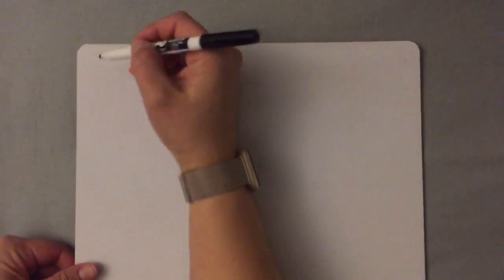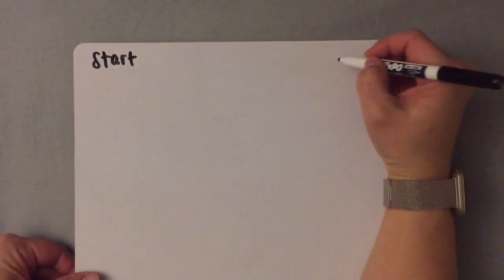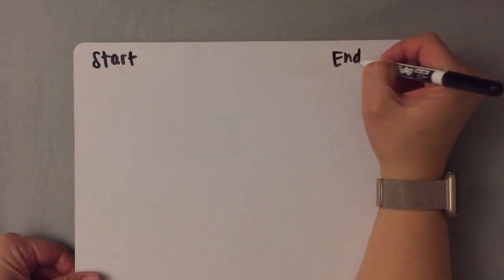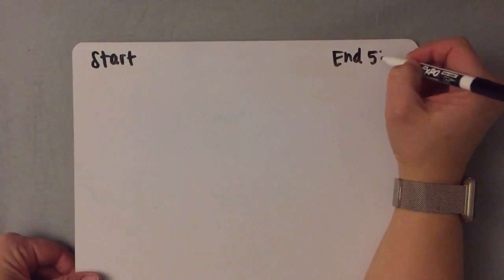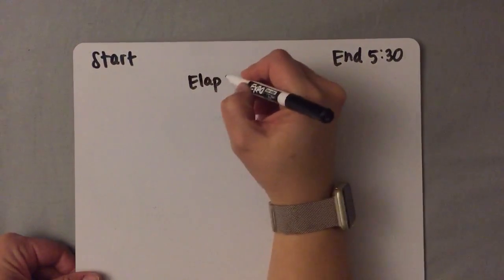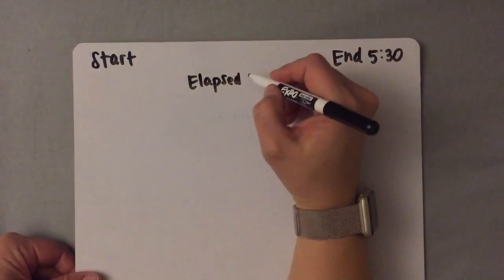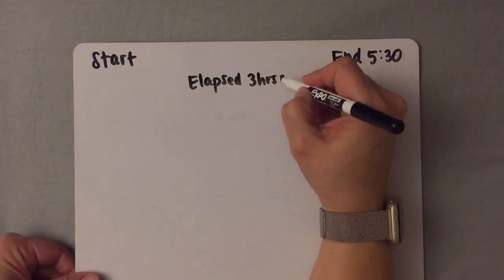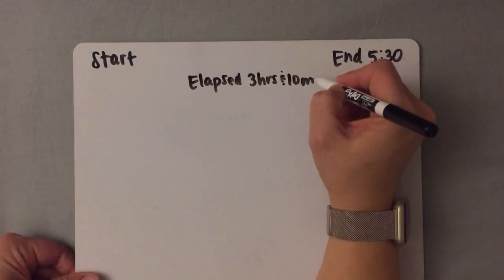Finding the start time can be the trickiest of all because you have to work backwards, meaning you have to subtract time. So in this problem, you're going to have an unknown start time, an end time of 5:30, and an elapsed time of 3 hours and 10 minutes.